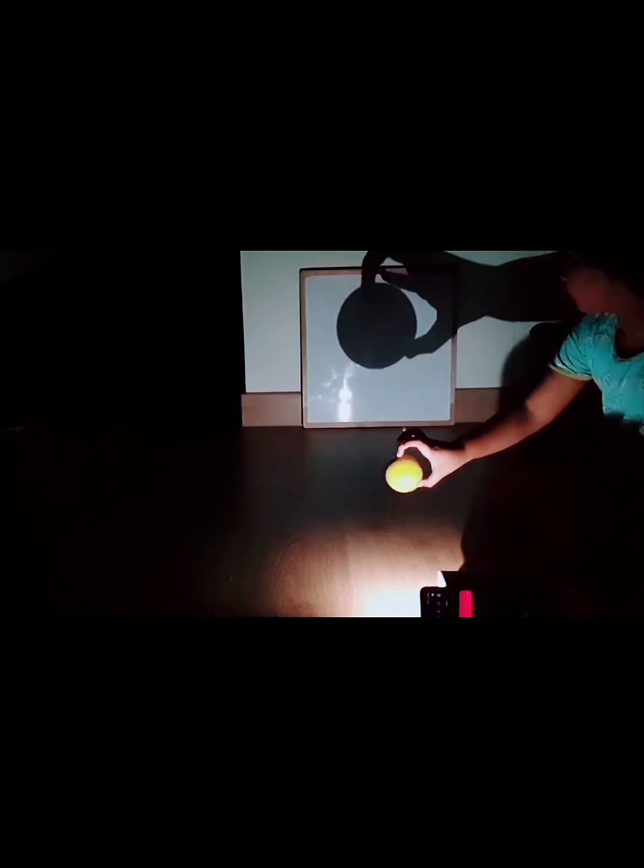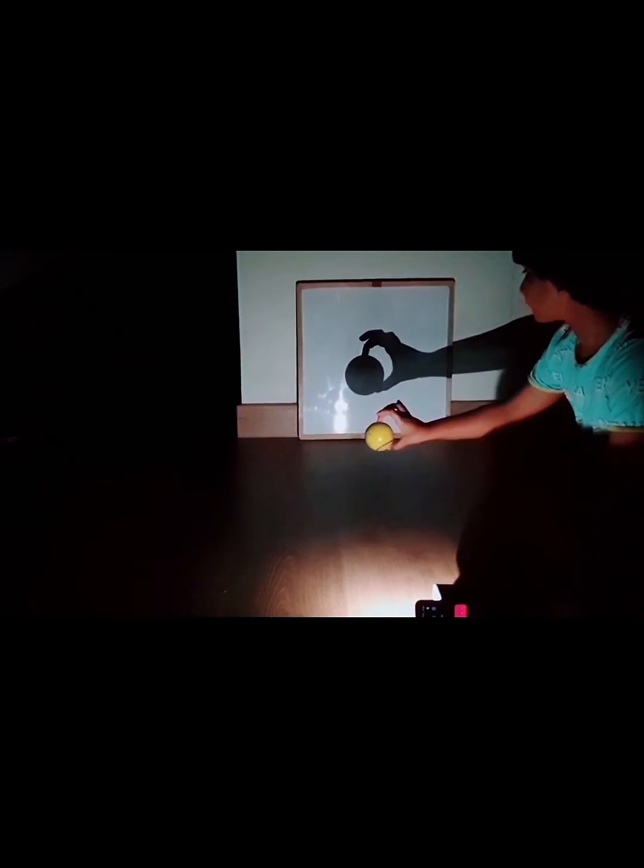Now, when the mobile torch is nearer to the ball, the shadow becomes larger, and when the mobile torch is far away from the ball, the shadow becomes smaller.